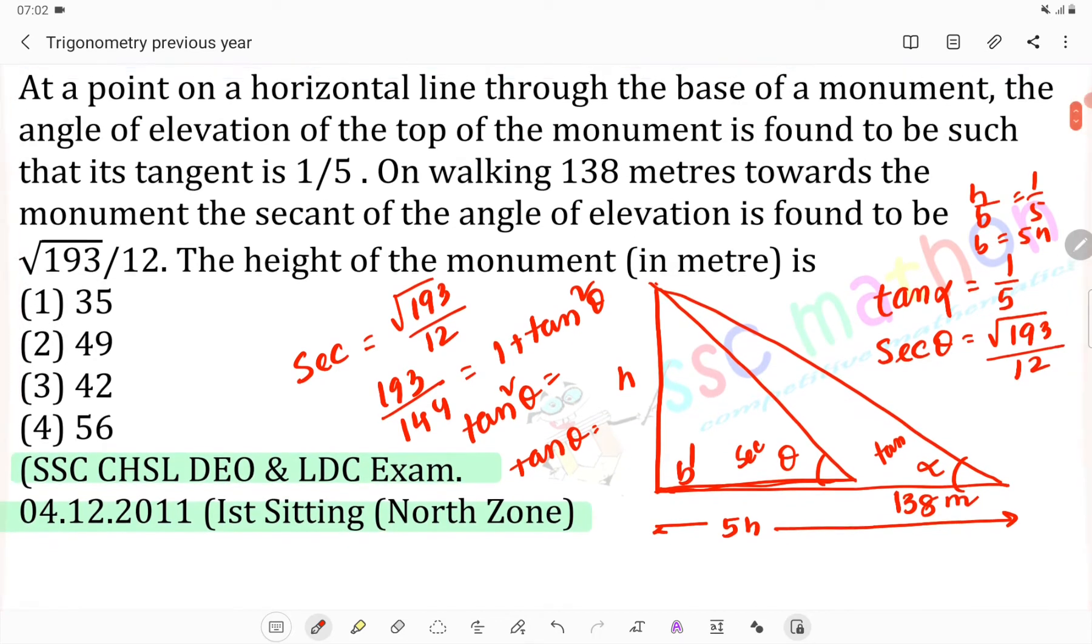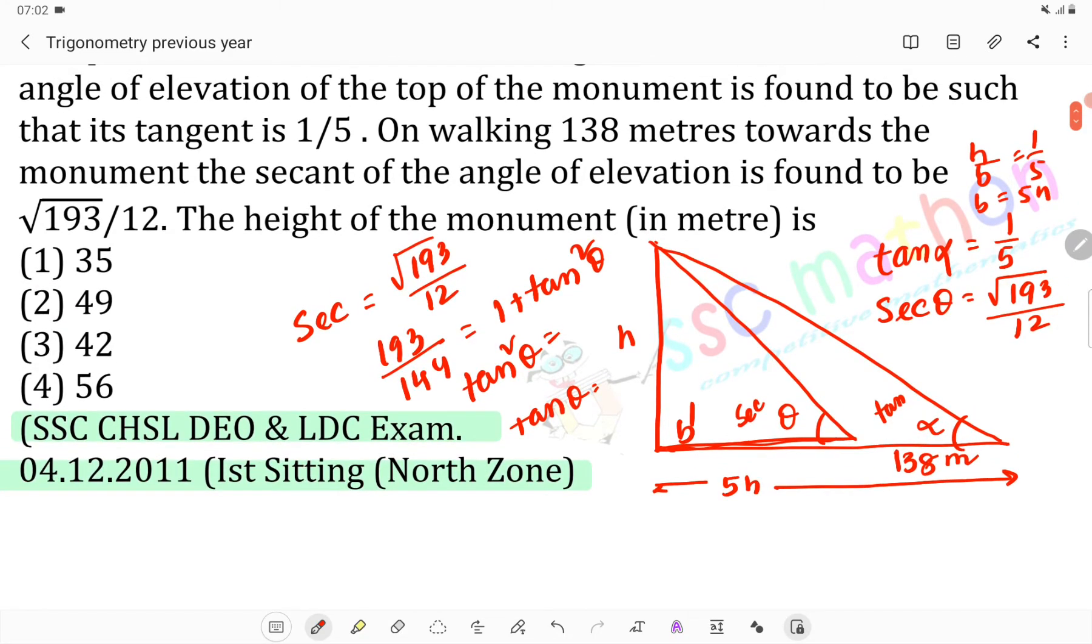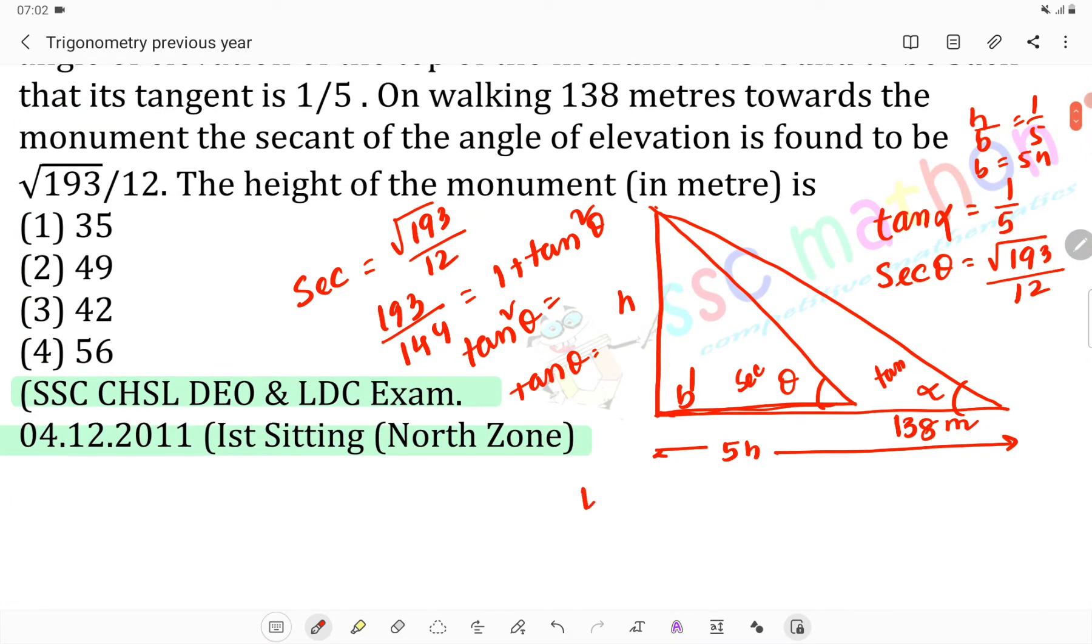So h upon b' we can see is 7/12, so b' equals 12h/7. This distance is 12h/7.